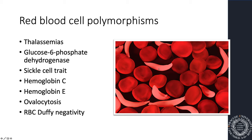People born with sickle cell disease typically don't survive past their 15th birthday. In the United States they do survive because of advanced medicine, but in sub-Saharan Africa they typically don't. People born without sickle cell trait have less protection from malaria. But those with sickle cell trait — the heterozygous combination — get a little protection from malaria without getting sick from the disease itself.